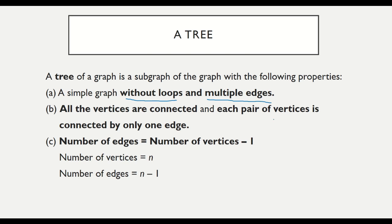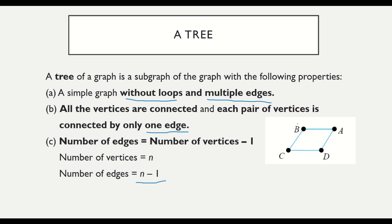Property C: the number of edges is equal to the number of vertices minus 1. If the number of vertices is n, then the number of edges equals n minus 1. Let's look at the example on the right.